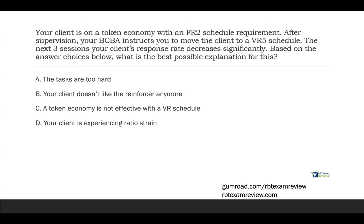You're on an FR2 schedule — pretty thick reinforcement schedule, giving a lot of reinforcement very quickly. Then all of a sudden you move to a VR5 — a variable ratio 5 schedule. You've really thinned out the reinforcement schedule. You're going from a lot of reinforcement on FR2 to a VR5 where it's much more difficult for your client to earn reinforcement. And your client stops responding. Answer A — tasks are too hard — we would never use this as a reason. Too hard is a construct; it doesn't tell us anything. Answer B — client doesn't like the reinforcer — there's no reinforcer mentioned. Not liking something is a construct.